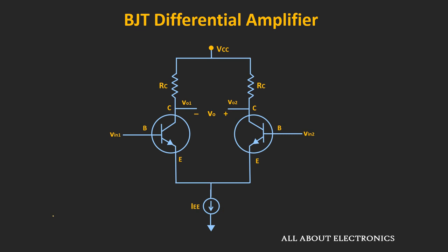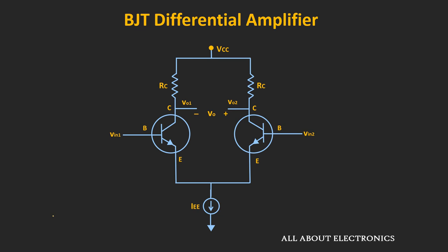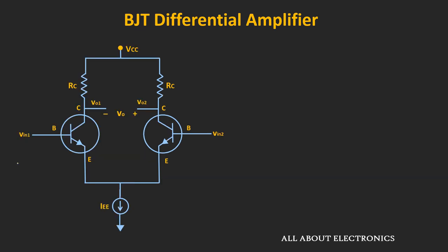Now when we say a large signal, the signal is typically much larger than the thermal voltage. As we are aware, this thermal voltage Vt is typically around 25 mV. So in this large signal analysis, we will assume that this differential input signal is much larger than the thermal voltage.